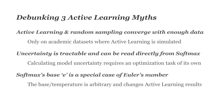Before I start, I'd like to debunk three active learning myths. The first is that active learning and random sampling converge with enough data. This is only true in academic datasets where active learning is simulated — the argument being that you don't need active learning if you've annotated a few hundred thousand items. But this simply isn't true unless you only started with 100,000 items, because academic datasets are randomly sampled from a pool you no longer have access to.